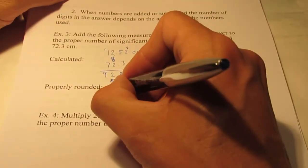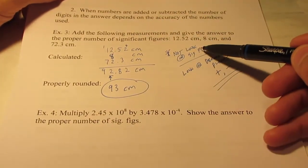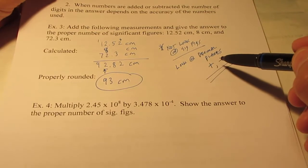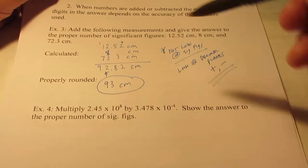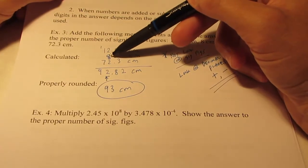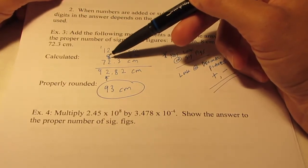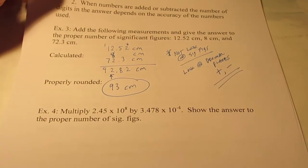So this would be 93 centimeters. So when you add or subtract, do not look at sig figs. You look at decimal places, and you round off to the least accurate. So hundredth, whole number, nearest tenth. I have to go to the nearest whole number because that's the least accurate. Okay. That's when you add or subtract.